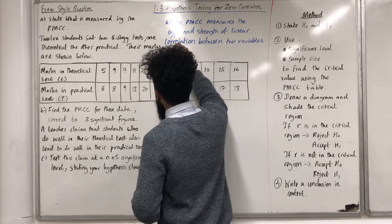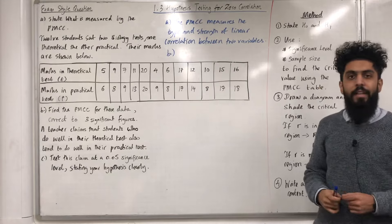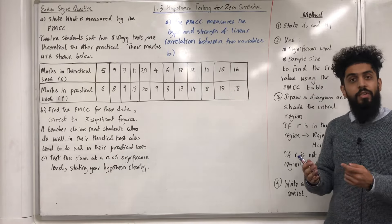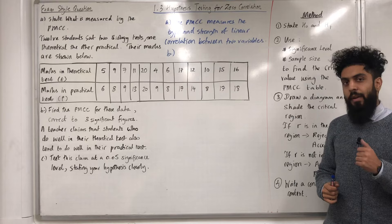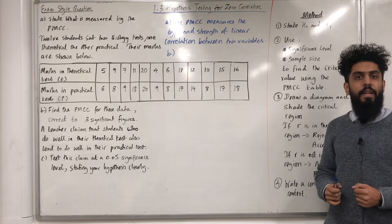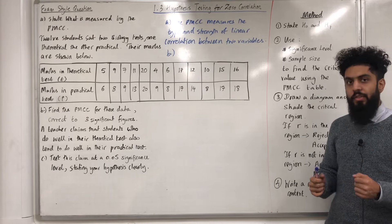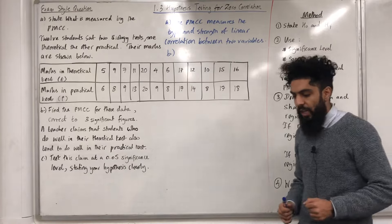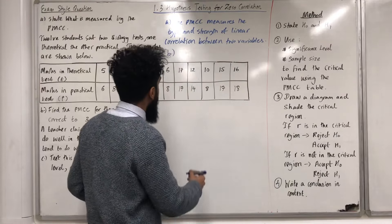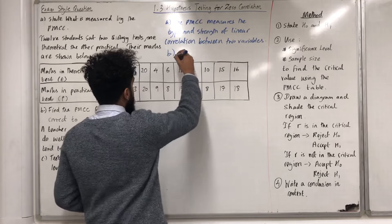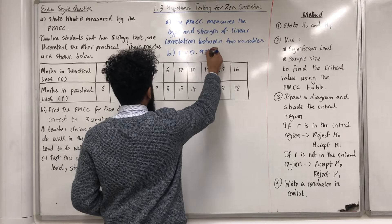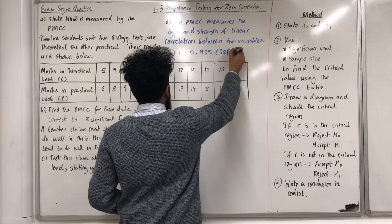For part B, we want to calculate the sample PMCC, the R value. We can use our Casio calculator — check my video 1.2 Measuring Correlation for how to work out the R value. Using the calculator, I get that the sample PMCC R is equal to 0.935 to three significant figures.